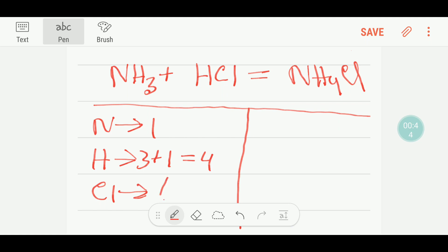On the right side, we have one nitrogen, we have four hydrogen, and here we have one chlorine. Now check the number of atoms on the left-hand side: nitrogen has one atom, on the right-hand side it has one atom.